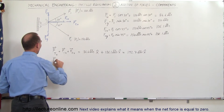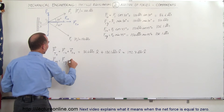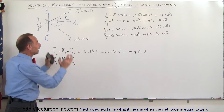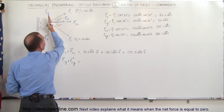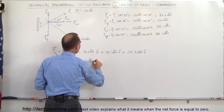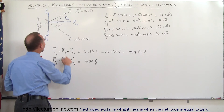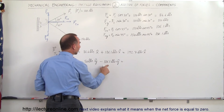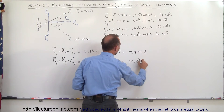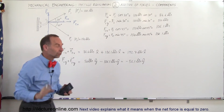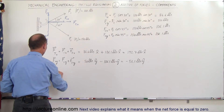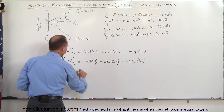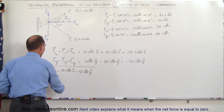Now for F total in the Y direction, that is equal to F1 in the Y direction plus F2 in the Y direction. I say plus because at this point I don't know yet the sign — I will worry about that when I plug in the components. F1 in the Y direction is positive, so it will be positive 50 pounds in the Y direction. But F2 in the Y direction is in the negative direction, so that will be minus 106.1 pounds in the Y direction. So 50 minus 106.1 gives us minus 56.1 pounds in the Y direction.